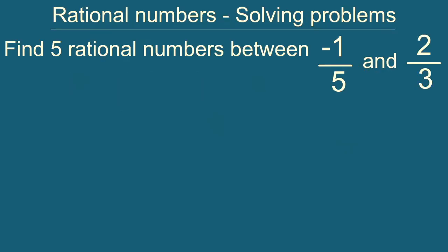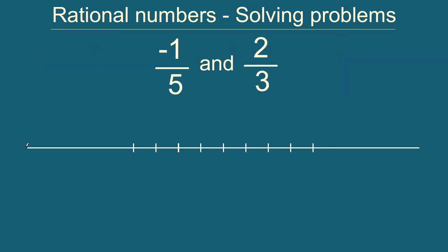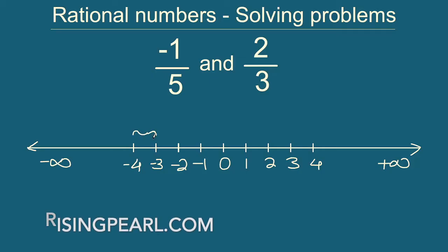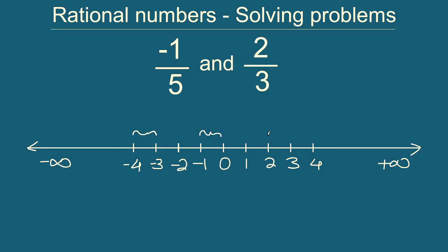Now quickly recall — let's first draw a number line. So here we have drawn a number line. Let's say somewhere here is 0. To the right of 0 the numbers are positive: 1, 2, 3, 4 all the way to plus infinity. And to the left of 0 the numbers are negative: minus 1, minus 2, minus 3, minus 4 and so forth all the way to minus infinity. Between any two rational numbers — for example between minus 3 and minus 4, or minus 1 and 0, or between 1 and 2 — we know there are infinitely many rational numbers that exist.